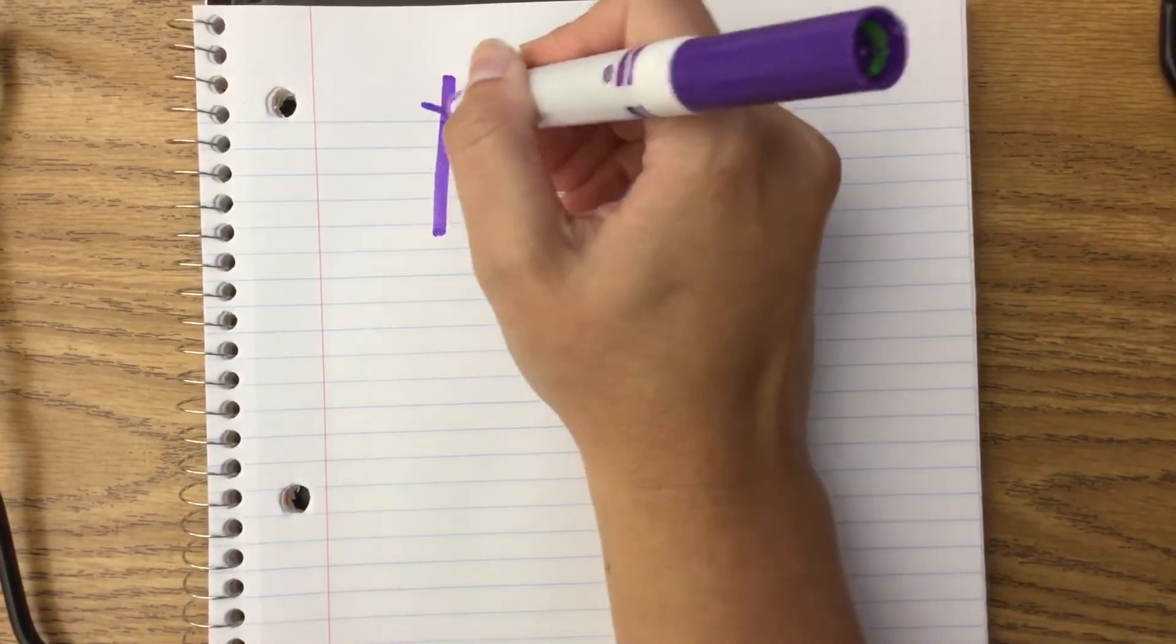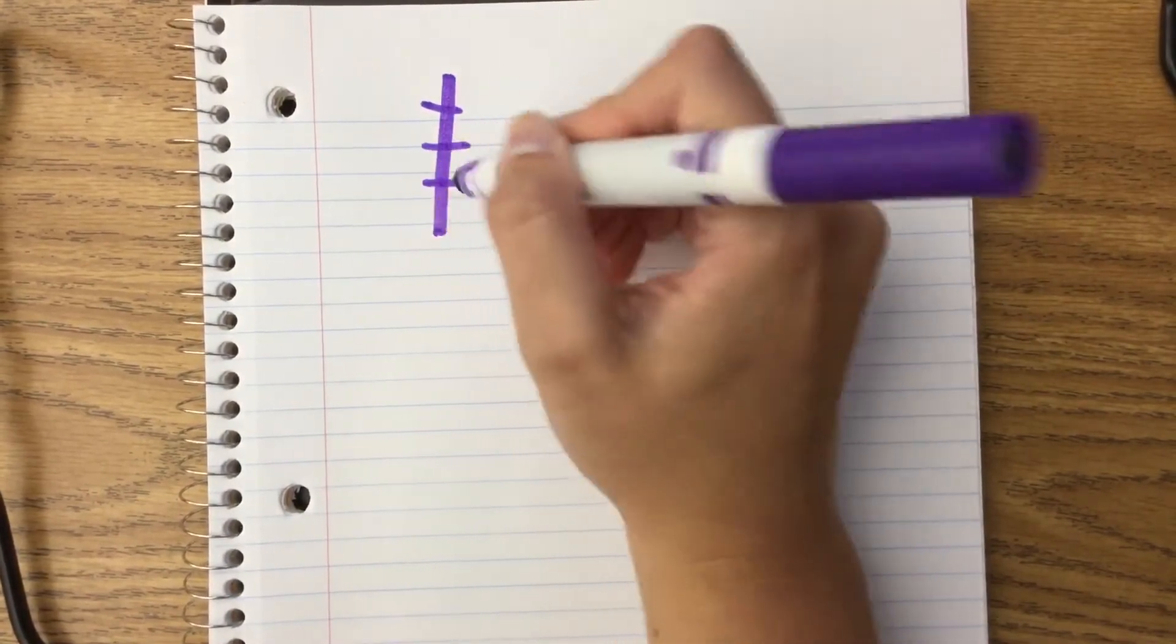Down, across, across, across, across. It's called a fish bone.